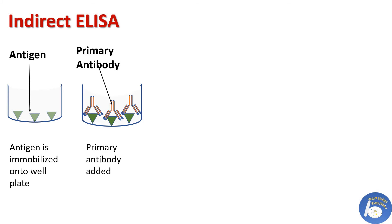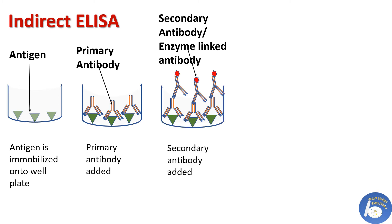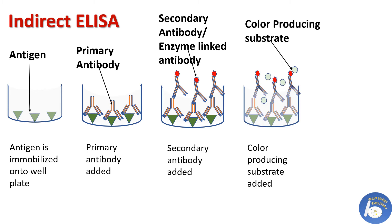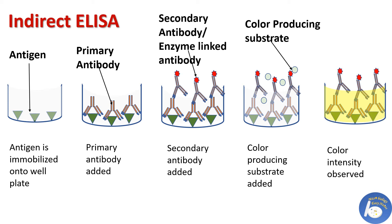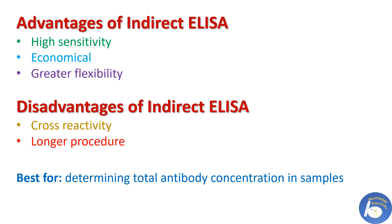The plate is kept for incubation, washed, and then a secondary antibody is added. After incubation and washing, a color-producing substrate is added. If antigen and antibody complex is formed, the substrate reacts with the enzyme and gives a particular color. Color intensity is measured by spectrophotometer.